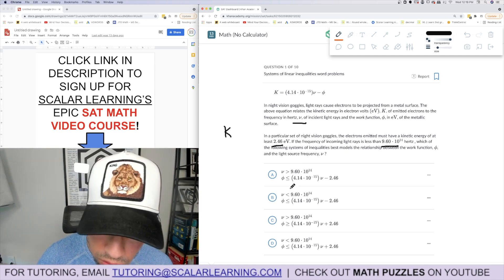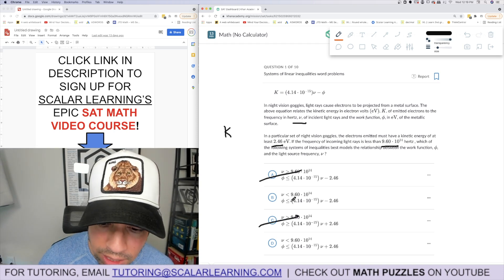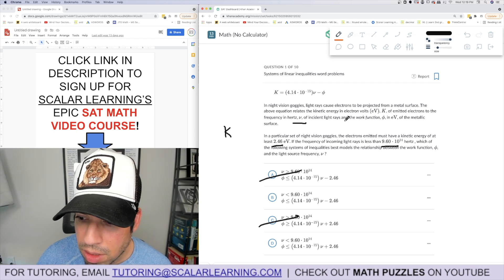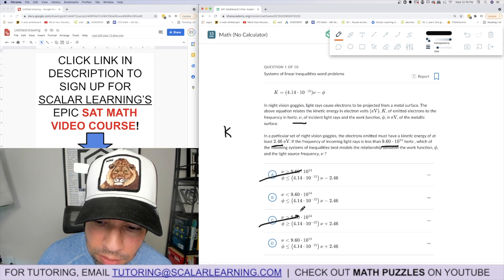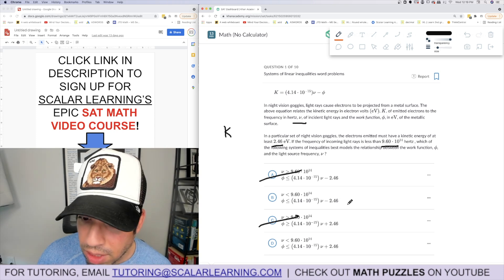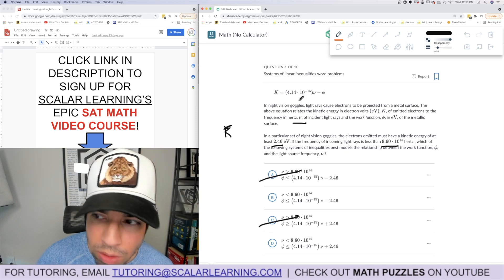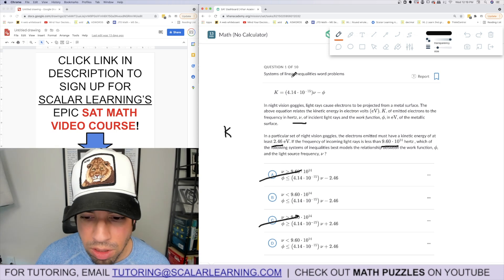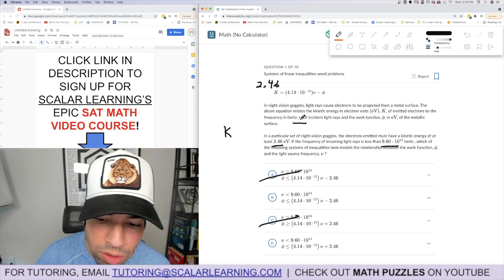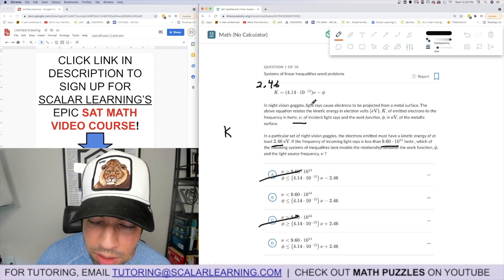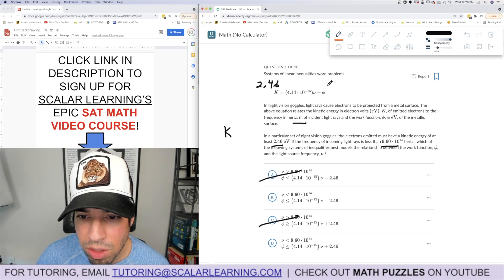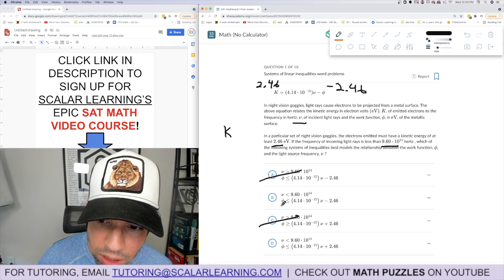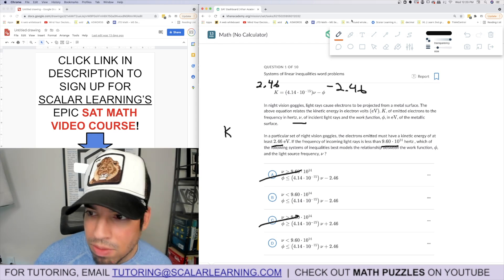So v has to be less than 9.6 times 10 to the fourth, so greater than is out. There's a relationship between the work function and the light source. What they're doing is they're plugging in 2.46 for this k value and then isolating. So it's 2.46, like they're swapping, so you bring this here and then you minus the 2.46 here. So then that symbol here equals this minus 2.46, which I believe is B. Oh my goodness, that's a hard problem.